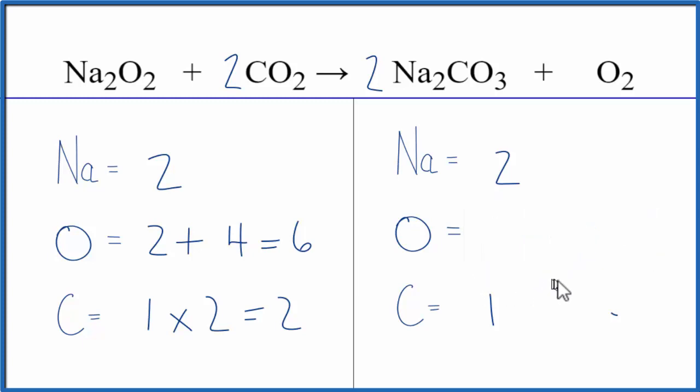We'll update these numbers here. We have two times two for the sodium. That gives us four sodiums. Two times three is six plus these two here. So now we have eight oxygens. And for carbons, we have the one carbon here times the two. So we have two carbons that balanced the carbons.